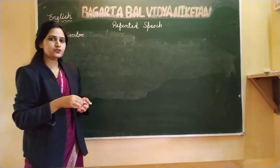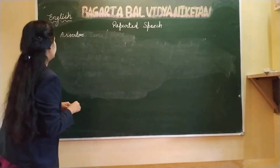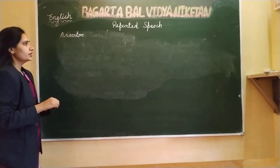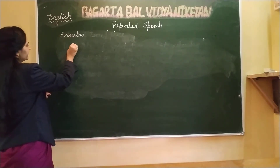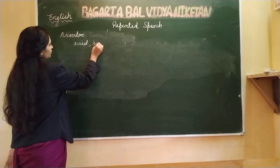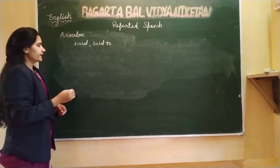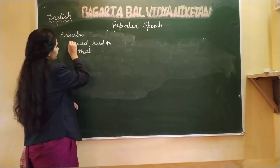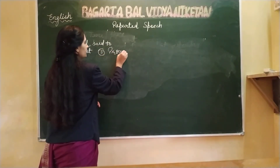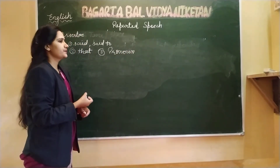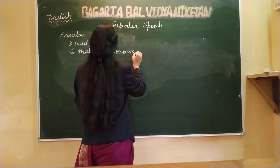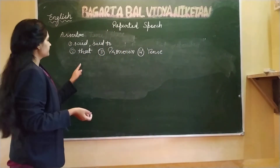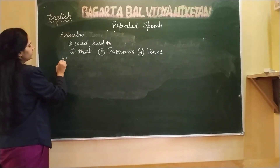Assertive or declarative sentences end with a full stop, so we can easily identify them. The example I gave you earlier was also an assertive sentence. When changing an assertive sentence to indirect speech: first, 'said' or 'said to' is changed; second, the conjunction 'that' is used; third, the pronoun is changed according to the sentence; and fourth, tenses are changed according to the rule.